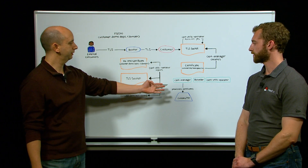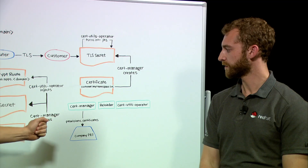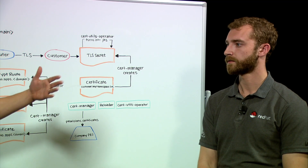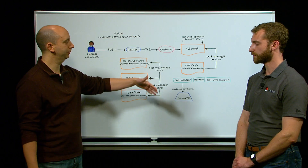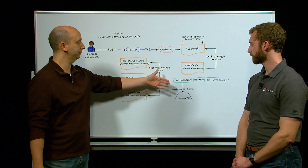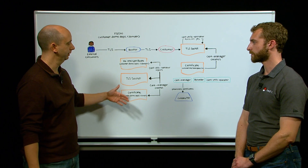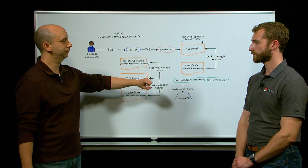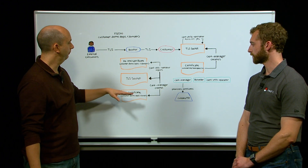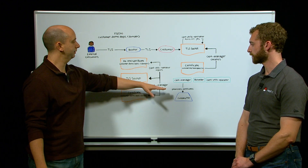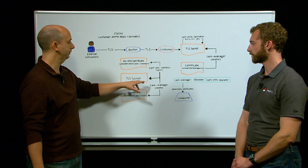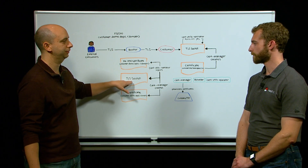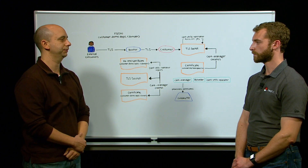The main operator here is cert manager. This operator is able to talk to your company PKI or certificate authority and create certificates based on certificate requests. This operator is an upstream open-source project. And when it creates a certificate, it will deposit the resulting TLS material into a TLS secret — it's an OpenShift secret.